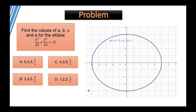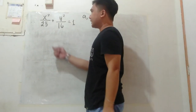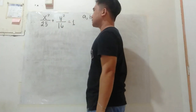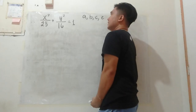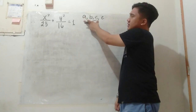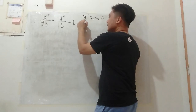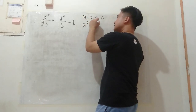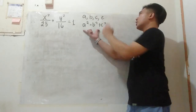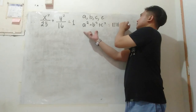Example 1: Find the values of A, B, C, and E for the ellipse x²/25 + y²/16 = 1. We are given the equation x²/25 + y²/16 = 1. Remember that A is the largest value among A, B, and C, and that A² = B² + C² for an ellipse.